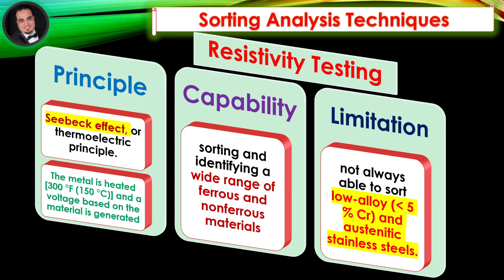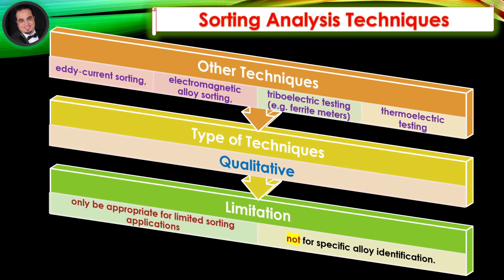Limitation: Resistivity testing is not always able to sort low alloy steels with less than 5% chromium and austenitic stainless steels. Other techniques such as eddy current sorting, electromagnetic alloy sorting, triboelectric testing, ferrite meters, and thermoelectric testing are qualitative in nature and may only be appropriate for limited sorting applications and not for specific alloy identification.